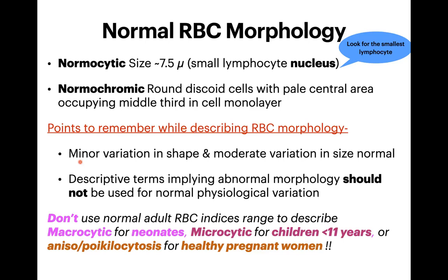Similarly, children below 11 years have smaller RBCs than adults, and these should not be described as microcytic — they are normocytic for that age group. A certain degree of anisocytosis is also normal for pregnant females and should not be described as abnormal. So for normal RBC morphology: normocytic normochromic, compare with the smallest lymphocyte, and do not describe normal physiological variations as abnormal findings.